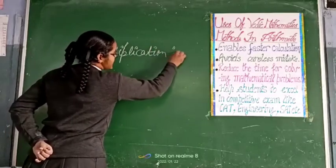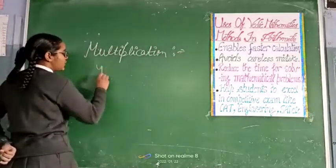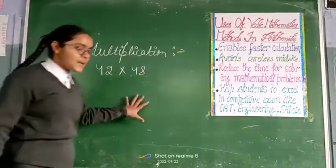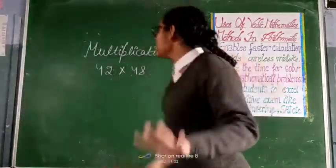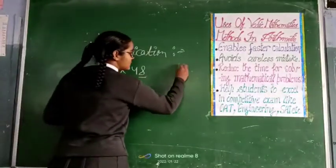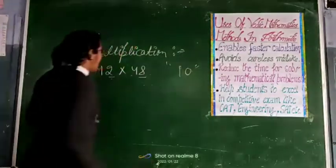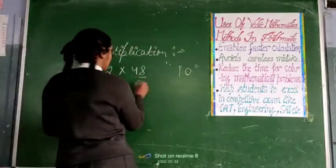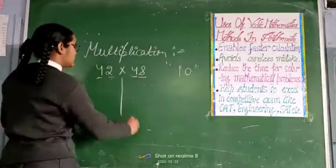If I am taking an example. Let's suppose 42 multiply by 48. And this method is applied when your ending digit sum makes 10. And your starting digits are common means equal. It is 4 and 4.